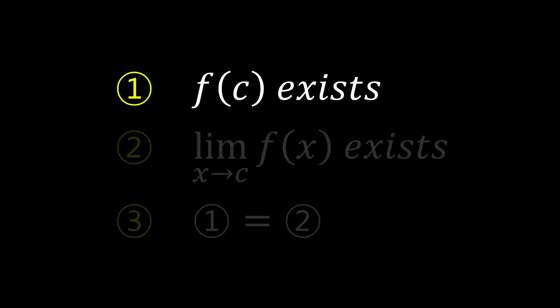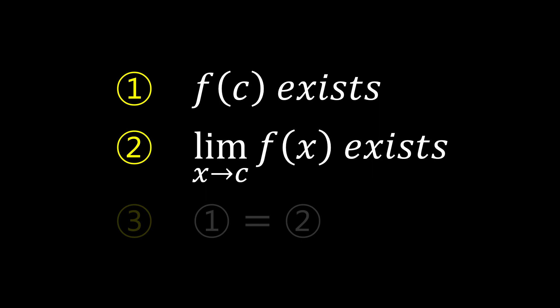Let's summarize once again. First, f(c) exists. Second, the limit of f as x approaches c exists. And third, if the value from the first and the second conditions are equal, then the function f is continuous at c.